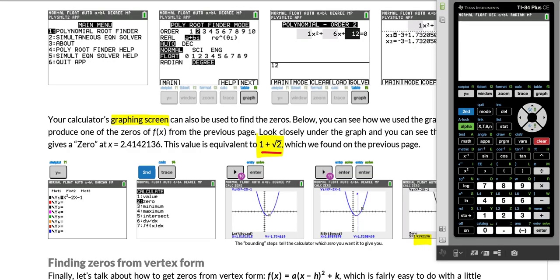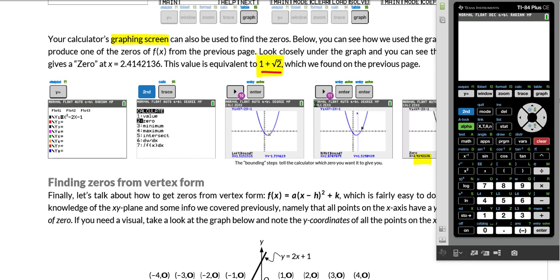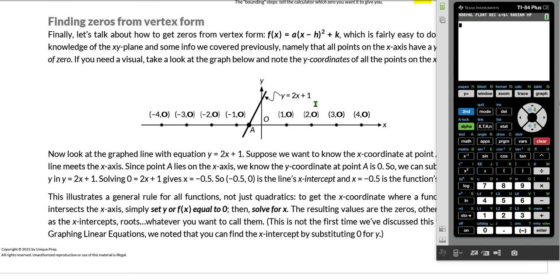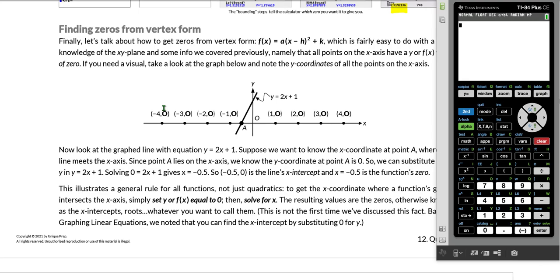As of this point, we have gone through finding zeros from intercept or factored form and from standard form in a few different ways. What we have not addressed is how we find zeros from vertex form, although we have indirectly talked about this already. At the bottom of the page, we are going to move into finding zeros from vertex form.